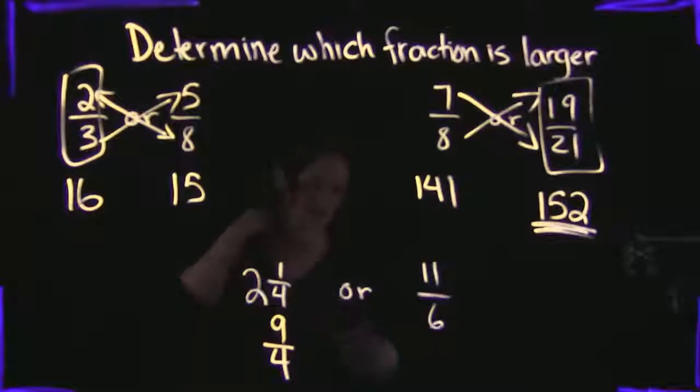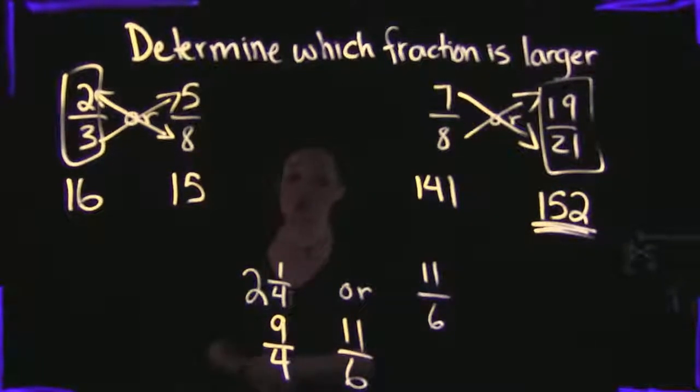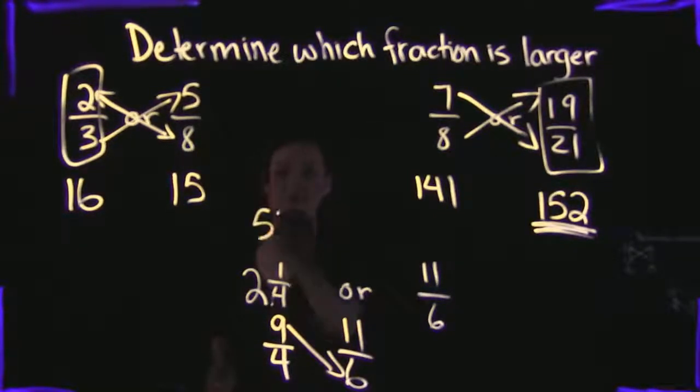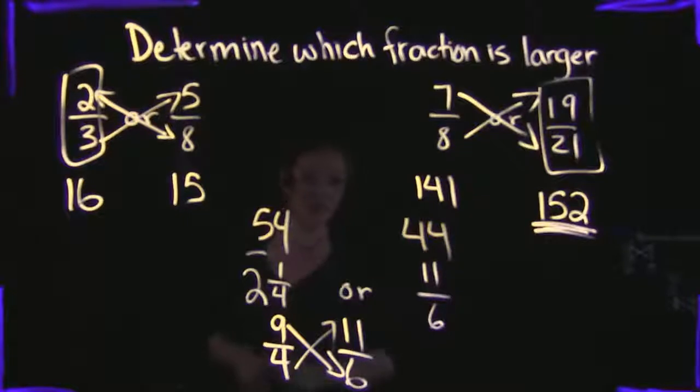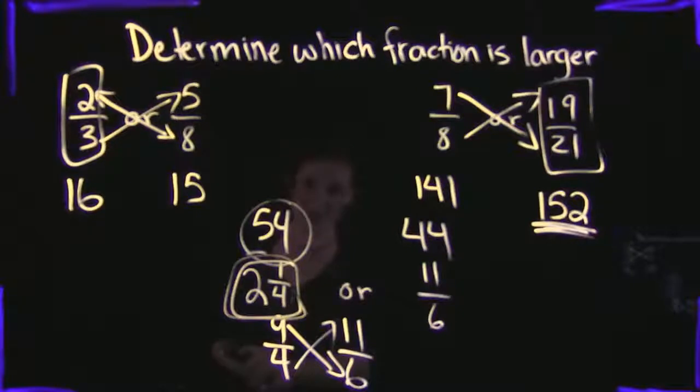Otherwise, I'm going to use that fraction, then, along with the 11 sixths to compare which one is larger. So taking 9 times 6, so 9 times 6 is 54. And then taking a look at 4 times 11 is 44. So which fraction is larger, 54 or 44? 54 definitely is. So that means the 2 and 1 fourths is larger than the 11 sixths.